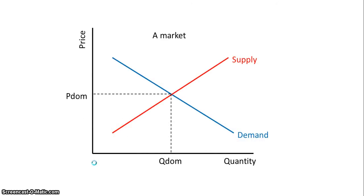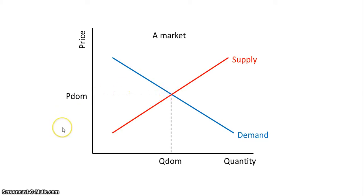The first thing we're going to do is we're going to look at just any market. We have a downward sloping demand curve and an upward sloping supply curve. I have made a note of my equilibrium price and called it PDOM — that is the domestic price. I have also noted my domestic quantity and labeled it QDOM. Right now we assume this market is a domestic market only and it is not open to free trade, so there are no imports coming into this domestic market at this particular time.